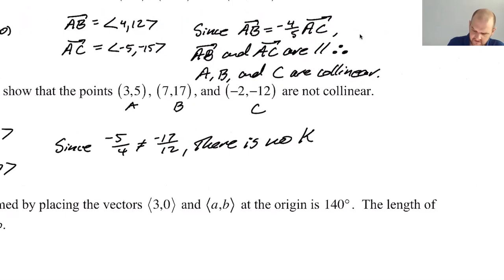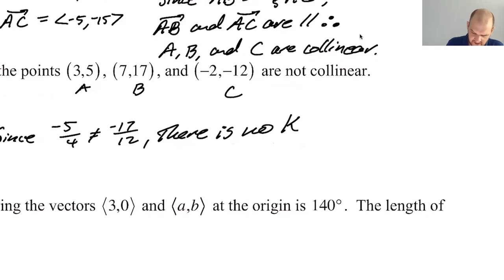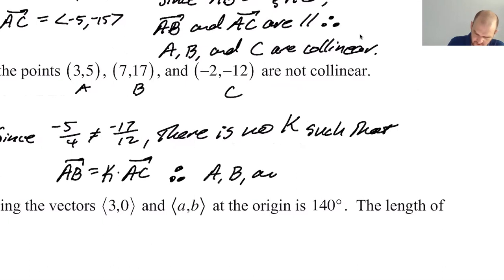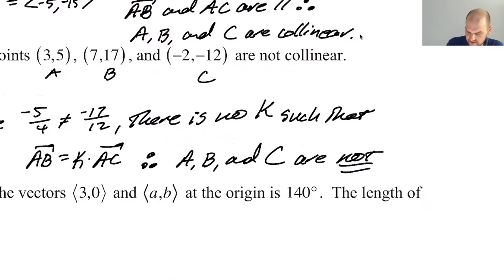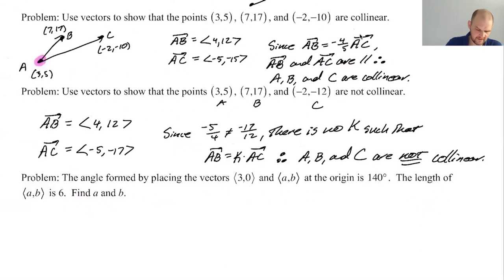If I'm not mistaken, this symbol, well, this is there exists. I think this symbol must be there does not exist. I haven't used that symbol in a long time if that is a symbol. So I'm just going to say there is no K such that AB equals K times AC. Therefore, A, B, and C are not collinear. And that's all we really need. If they were collinear, they would have been parallel. They're not parallel. And so they can't be collinear.